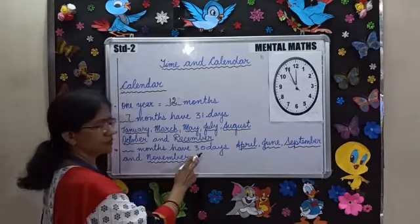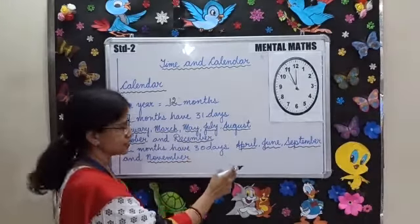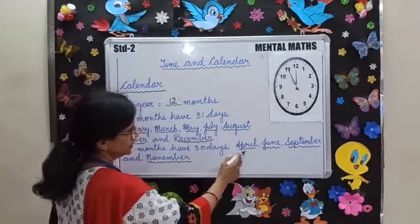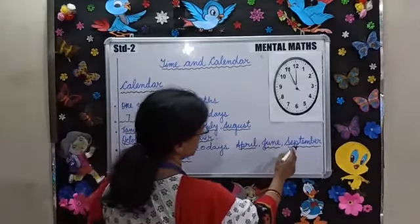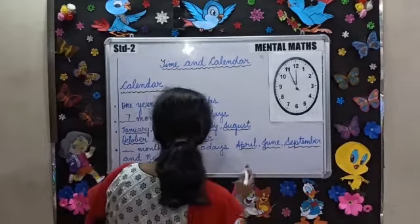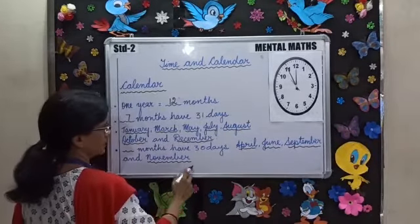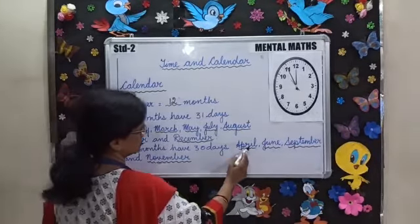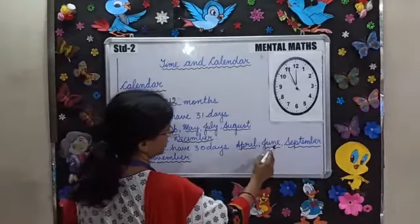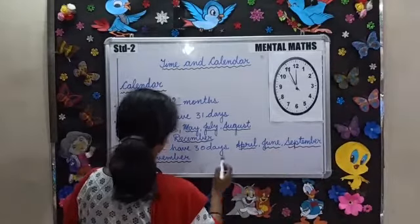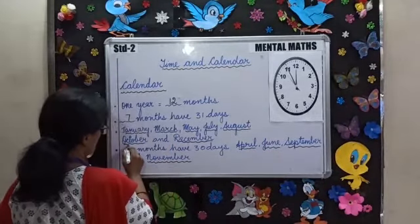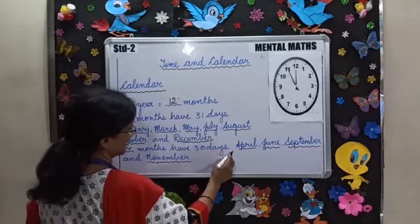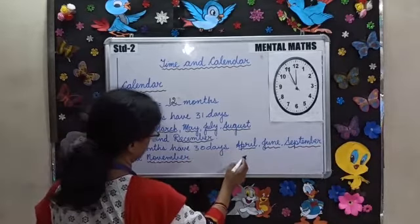Some months have 30 days: April, June, September and November. That is 1, 2, 3 and 4. So 4 months have 30 days.